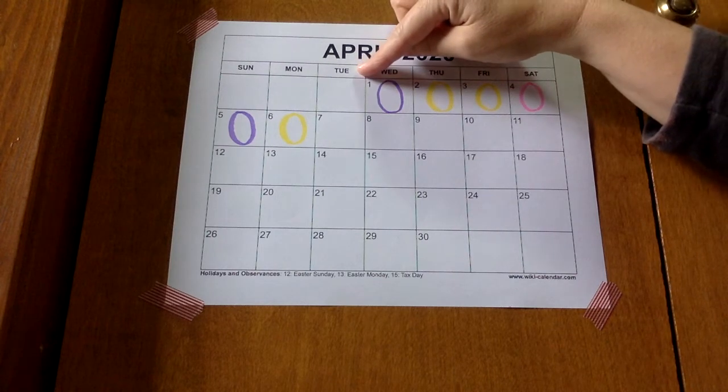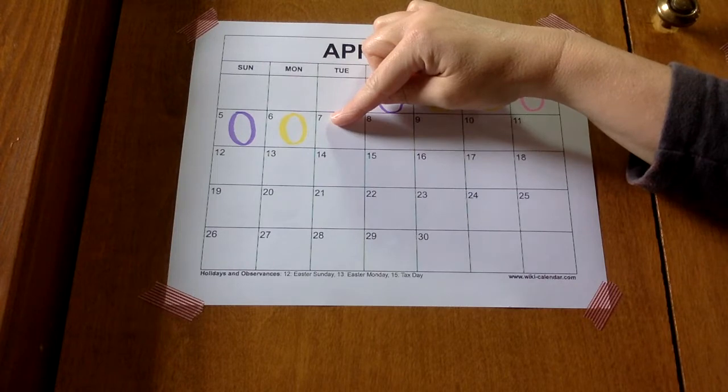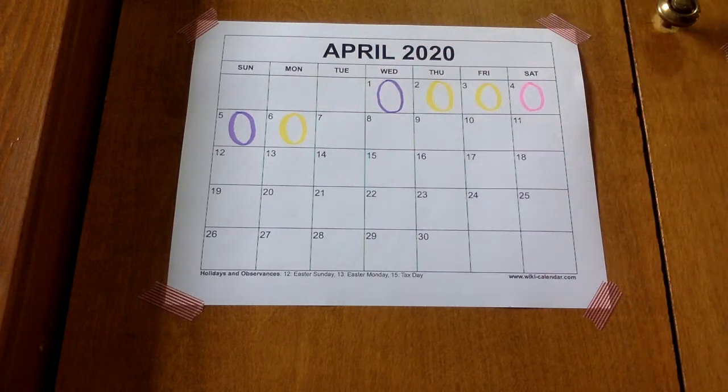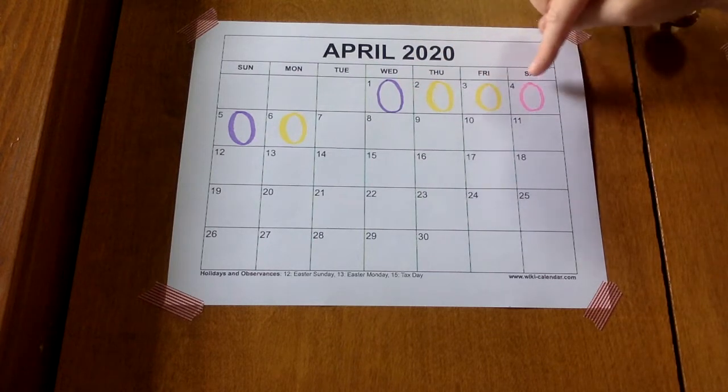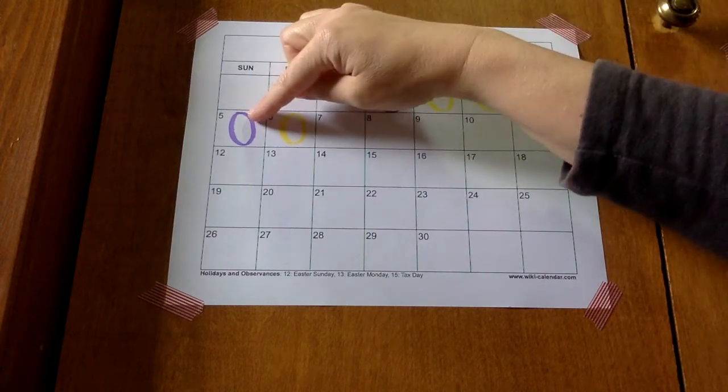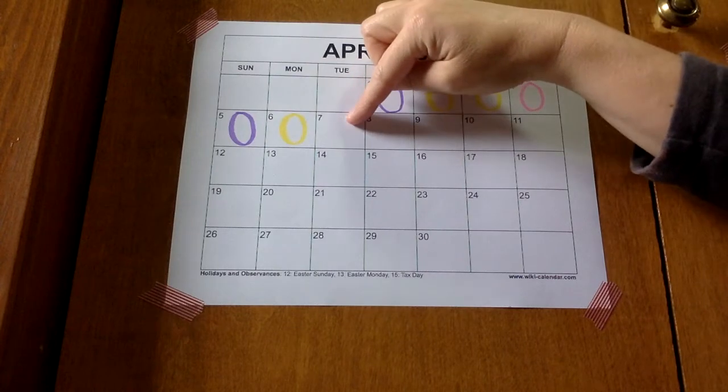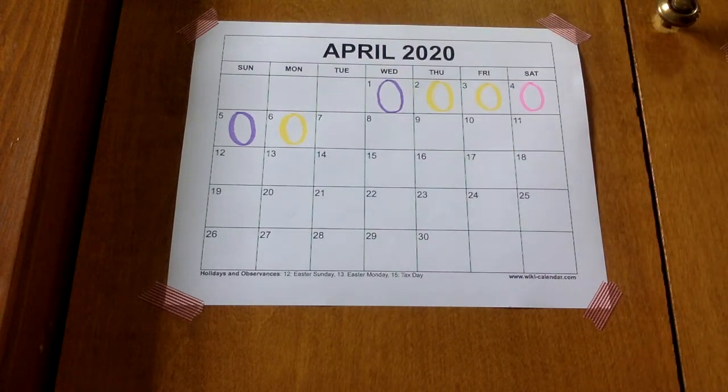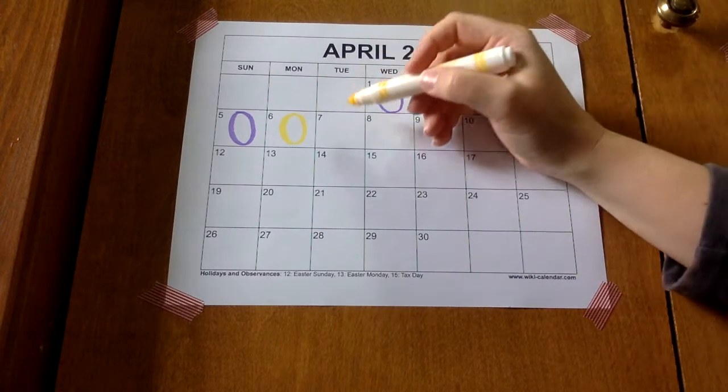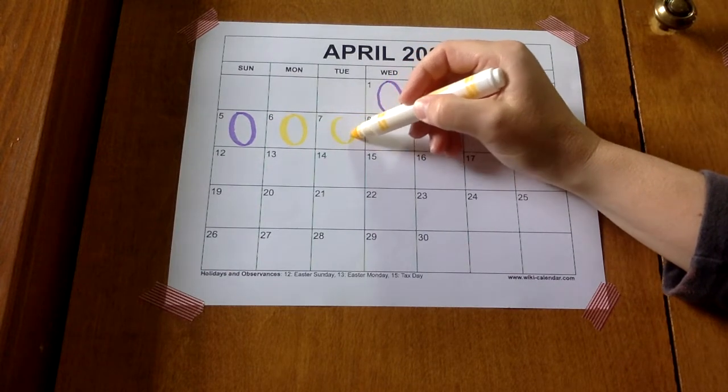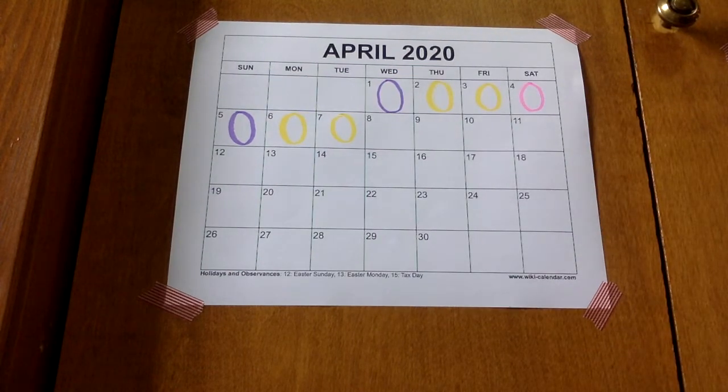Today is Tuesday, April 7th. Let's check our pattern and see what color we need for today. Lavender, yellow, yellow, pink. Lavender, yellow. Yes, yellow is next. Our pattern is A, B, B, C. So we get two yellows in a row for that pattern.